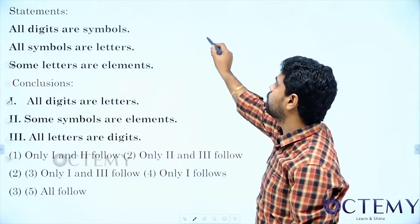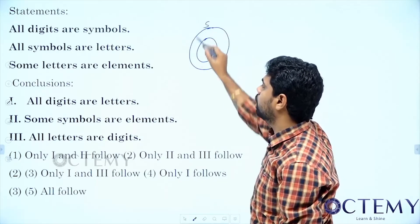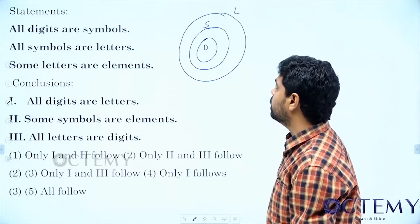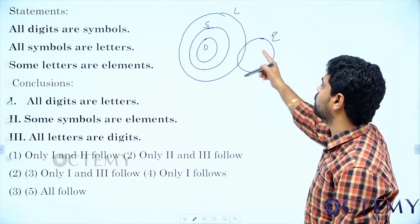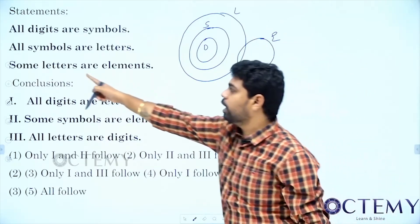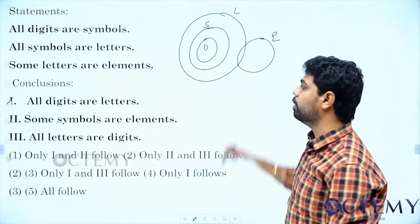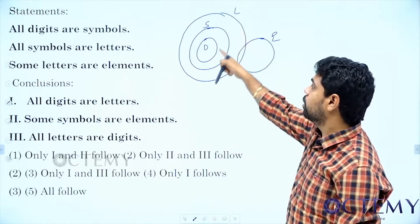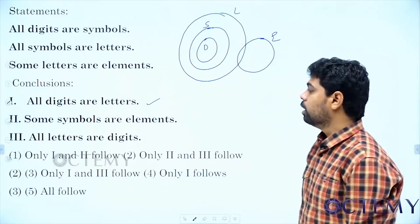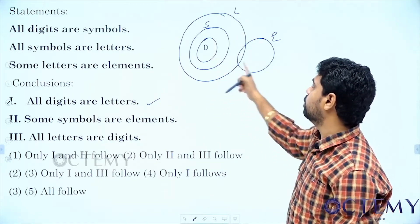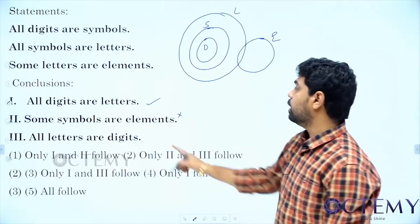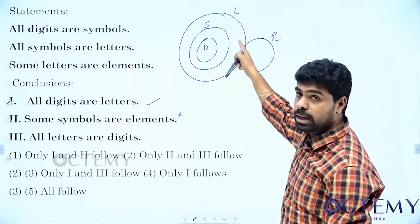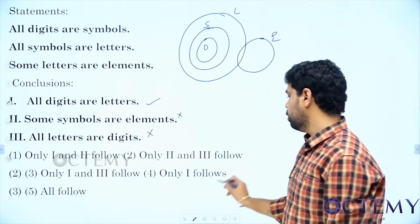All digits are symbols. All symbols are letters. Some letters are elements — he gave relation between letters and elements only, so I am taking that. Now: all digits are letters — is this correct? Yes, this is following. Some symbols are elements — is there any relation between symbol and element? No, so this does not follow. All letters are digits — no, only some letters are digits but all digits are letters, so this is also not following. Only conclusion one follows.